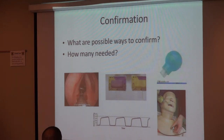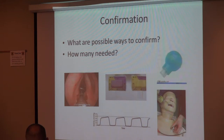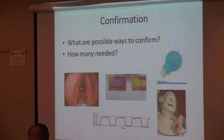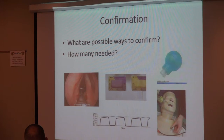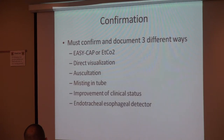Possible ways to confirm tube placement: direct visualization, misting in the tube, end-tidal CO2 colorimetric change, equal bilateral chest rise, lack of epigastric sounds on auscultation, end-tidal capnography waveform. There's also the esophageal detector bulb — it's in the kit and technically in protocol, but less than ideal. You should confirm with at least three methods. Improvement of clinical status is also a marker. Esophageal detectors are less sensitive and specific.